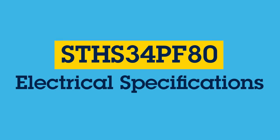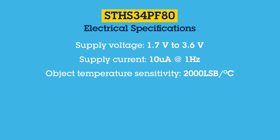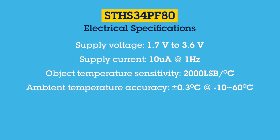Let's now observe the sensor's electrical specifications. The IR sensor takes a supply voltage from 1.7 to 3.6 volts and runs on a very low current of 10 microamps at one hertz sampling rate. The sensor is quite sensitive and accurate, achieving object temperature sensitivity of 2000 LSB per degree centigrade and ambient temperature accuracy of plus or minus 0.3 degrees C at negative 10 to 60 degrees C. It has a digital interface for I2C and SPI for simple integration and bring-up.